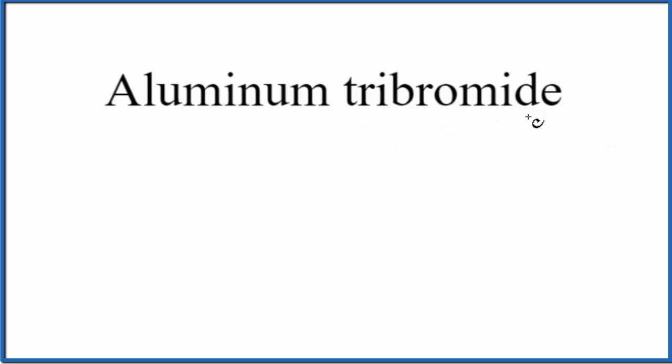The first thing we note is that we have aluminum and the bromide, the bromine. Metal, non-metal—we usually think of this as an ionic compound, but it does have a significant amount of covalent character.